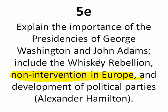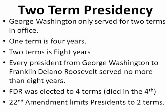George Washington was a two-term President, establishing this precedent — or custom — where presidents only serve two terms. One term is four years; two terms is eight years as President of the United States. Every president from George Washington to FDR — Franklin Delano Roosevelt in 1932 — served no more than eight years or two terms. FDR was elected to four terms and died in his fourth term. After FDR died, the 22nd Amendment was ratified, limiting the President to two terms — making it constitutionally law.